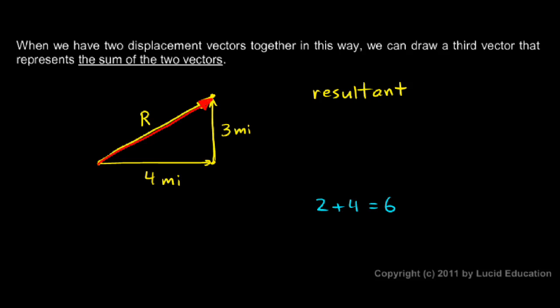In the same way, if you hike four miles east and then hike three miles north, the end result is that you're at this spot. The end result is the same as if you had hiked this distance in this direction. So the resultant vector by itself is equivalent to the original two.